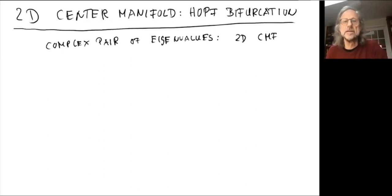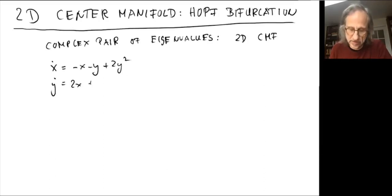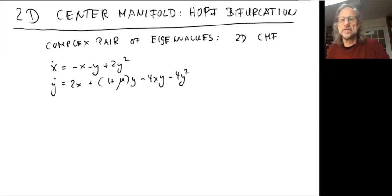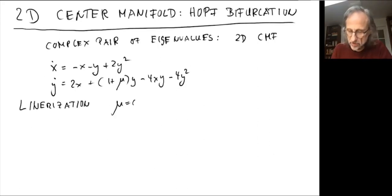Let's take a concrete system. We have x dot equals minus x minus y plus 2y squared, and y dot equals 2x plus (1 + mu)y minus 4xy minus 4y squared. It's some dynamical system with quadratic nonlinearities. When you make the linearization, you find out that it has a complex pair of eigenvalues crossing the imaginary axis at mu equals zero. At mu equals zero, you have eigenvalues lambda 1 and 2 being plus minus i.